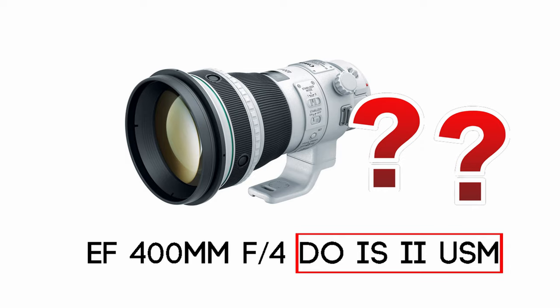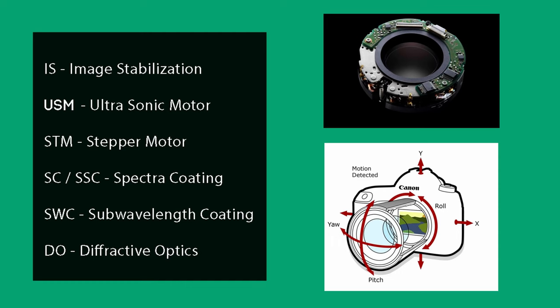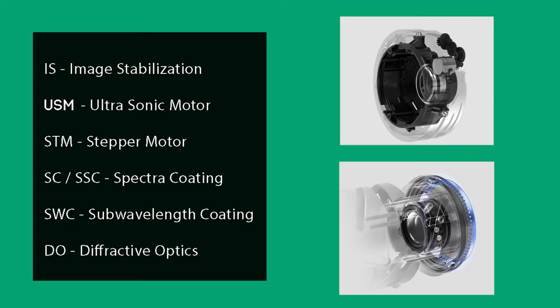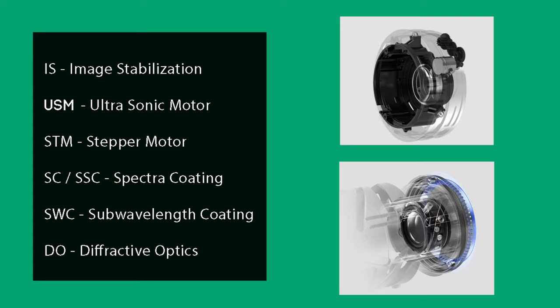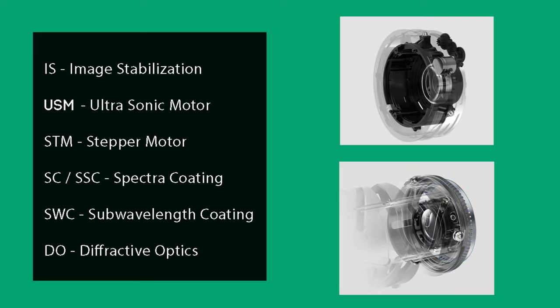Some additional abbreviations you might see on a Canon lens, probably towards the end of the lens description, would be IS, which is image stabilization. These are internal mechanisms that help stabilize camera movement. USM and STM are motors — the USM is the ultrasonic motor, and the STM is the stepper motor. They give you faster focus and they're very quiet.